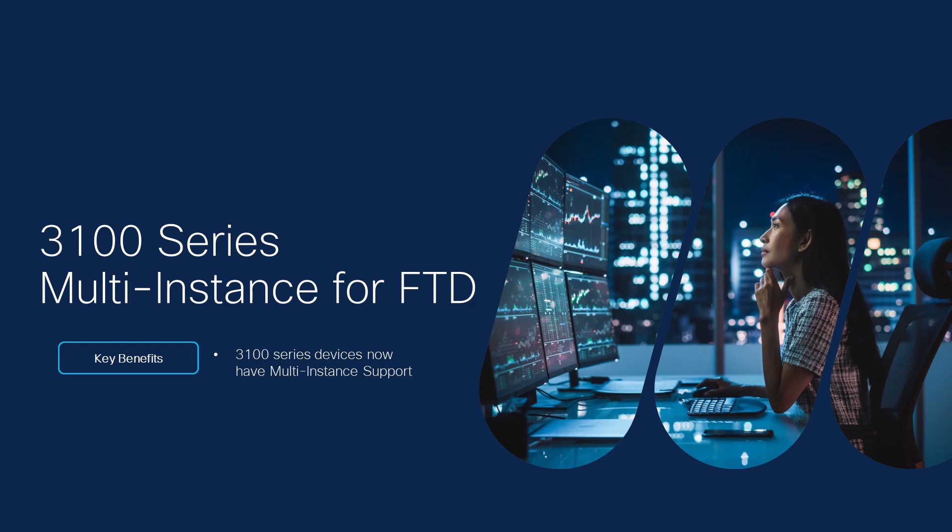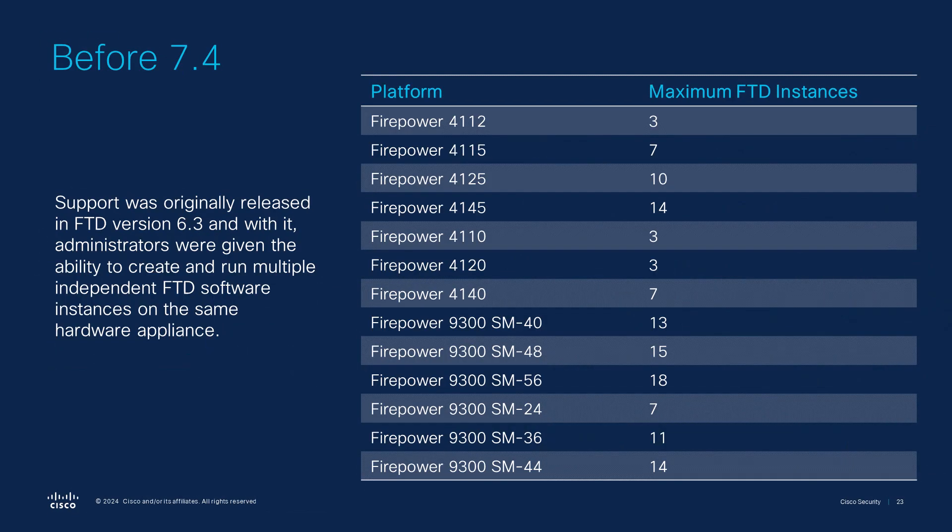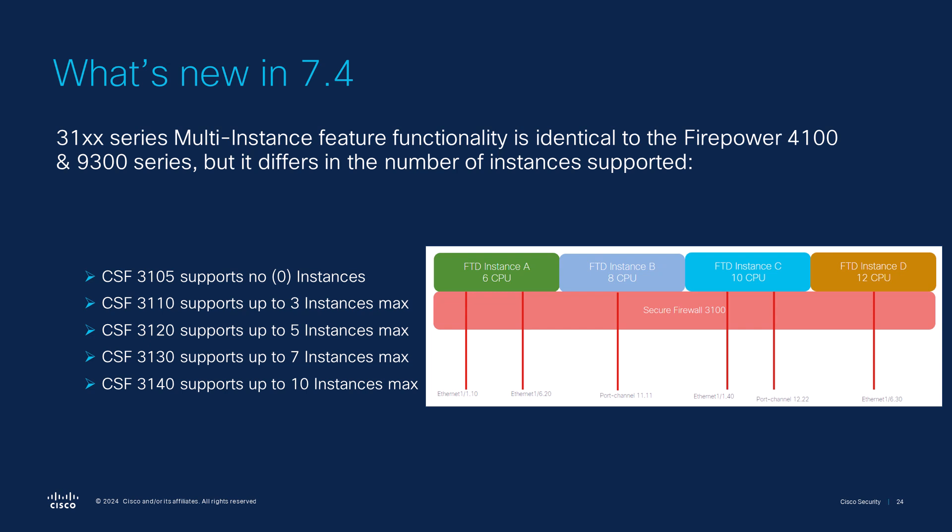Second to last, we have multi-instance support for the 3100 series. Support was originally released in FTD version 6.3, giving administrators the ability to create and run multiple independent FTD software instances on the same hardware appliance, with each instance having dedicated hardware resources to guarantee performance and ensure one instance cannot affect another. However, the only platforms with multi-instance before 7.4.1 were the high-end Firepower 4100 and 9300 series. As of 7.4.1, the 3100 series now has identical feature functionality, plus one major improvement: a single management solution in the FMC versus the traditional chassis manager.